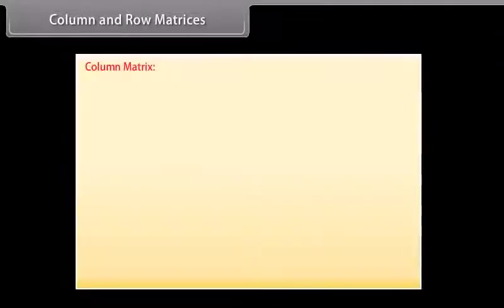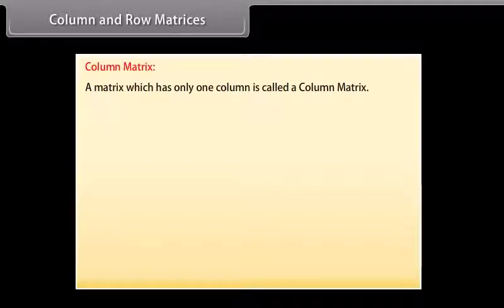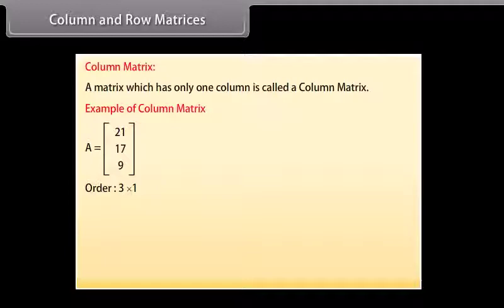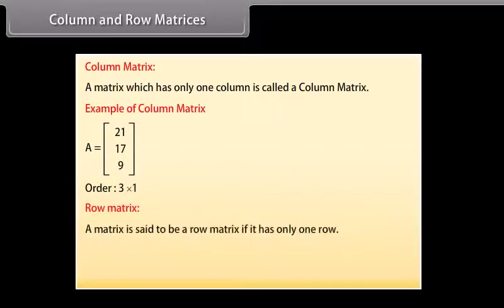A matrix which has only one column is called a column matrix. For example, A = [21, 17, 9] column-wise — this matrix has three rows but only one column, so it is a column matrix with order 3 by 1. A matrix is said to be a row matrix if it has only one row.